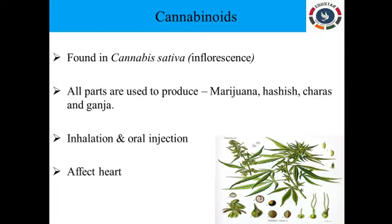Cannabinoids are naturally occurring compounds found in the plant Cannabis sativa. Nearly 480 different components are present in this plant, among which 66 components are used for drug production. The flower tops, leaves, resins, and all parts of the plant are combined in various combinations to produce different products: marijuana, hashish, charas, and ganja.